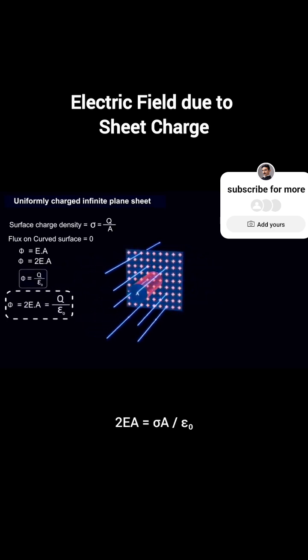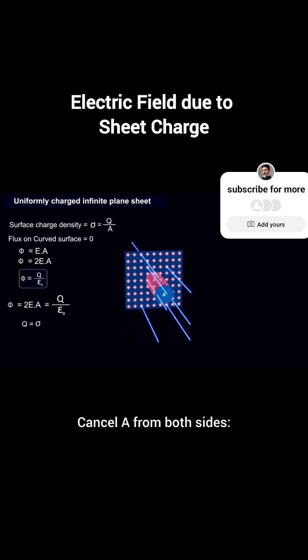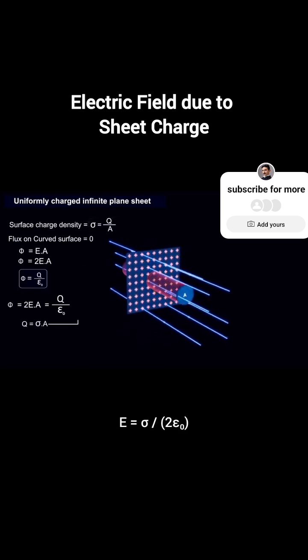Equating both, 2EA equals sigma A divided by epsilon zero. Canceling A from both sides, E equals sigma divided by 2 epsilon zero.